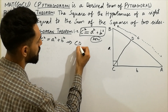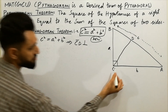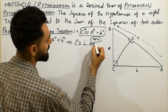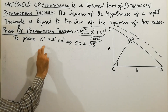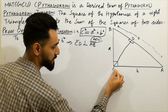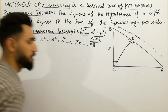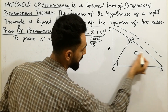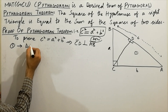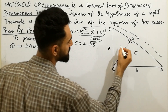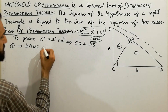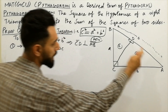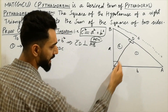Let's call the foot of that perpendicular D, so CD is perpendicular to AB. Remember, to prove c² = a² + b², you draw this line so that CD is perpendicular to AB. This means triangle ABC is decomposed into two smaller triangles: the first is triangle ADC, and the second is triangle BDC.